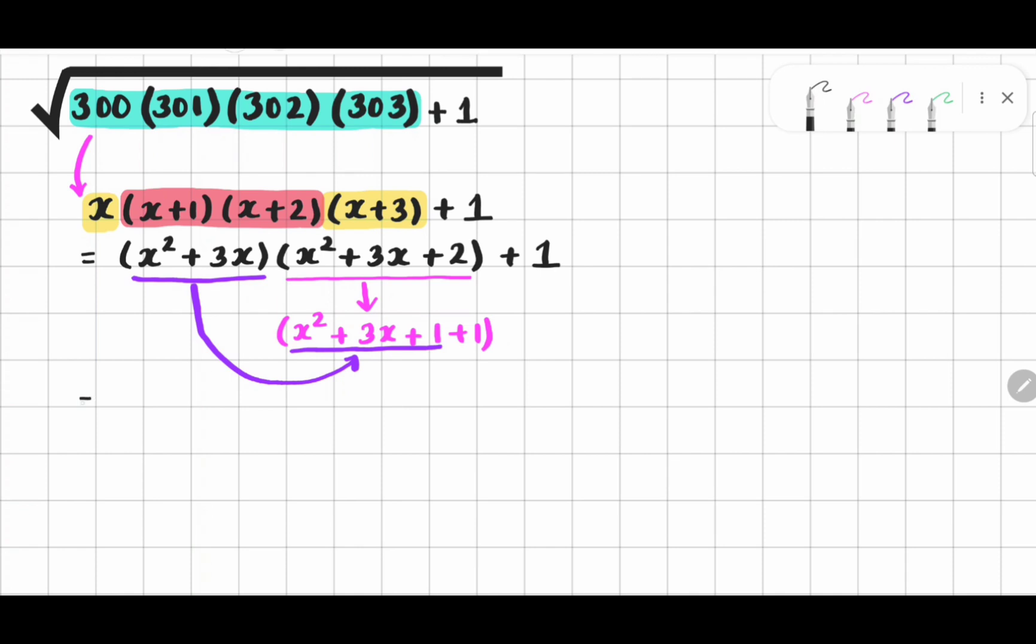Consequently, we get x square plus 3x times x square plus 3x plus 1. Now, I am going to distribute the same factor to this one. We get x square plus 3x. The remaining plus 1 will come here.